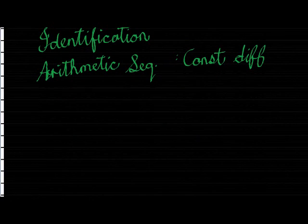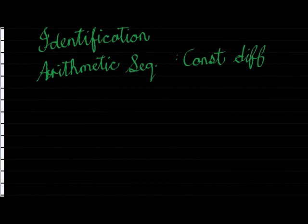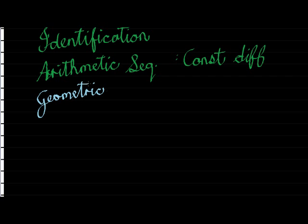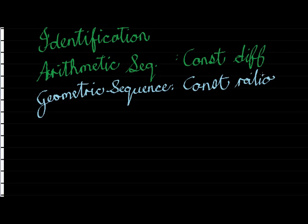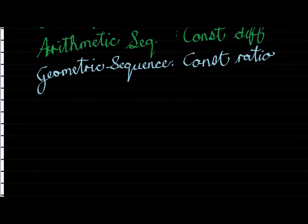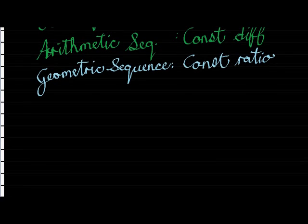Then, we also get the geometric sequence. And, you should remember this from previous grades. Or, you might. And, the geometric sequence also has a constant, but it's got a constant ratio. Because, in the geometric sequence, we're multiplying to get the next value. In the arithmetic sequence, we add to get the next value. Okay. And then, finally, we get a quadratic sequence.